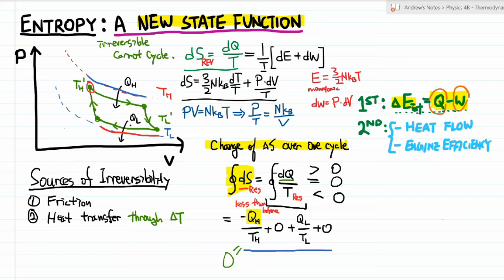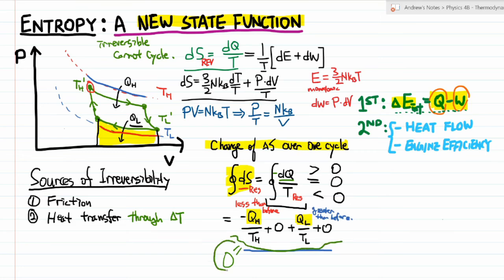Now let's look at QL. Comparing the area for the reversible Carnot engine with the area for the irreversible Carnot engine, and following the same reasoning — looking at the magnitude of work done and connecting it through the first law — we can draw the conclusion that QL is greater than before. So comparing the irreversible process with the previously reversible process: the negative quantity has a smaller magnitude than before, and the positive quantity has a larger magnitude than before.